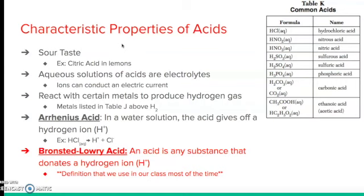There are two definitions of an acid. There's the Arrhenius acid — in a water solution, acids give off hydrogen ions (H+). For example, hydrochloric acid in an aqueous solution makes H+ and Cl-. Our second definition is the Bronsted-Lowry definition of an acid, which says that an acid is any substance that donates a hydrogen ion. These two definitions are very similar; Bronsted-Lowry just expands on it so that the substance doesn't necessarily need to produce a hydrogen ion alone in water.